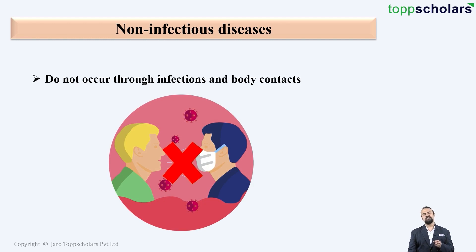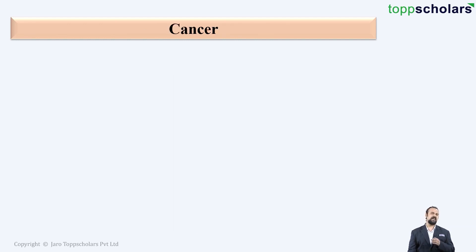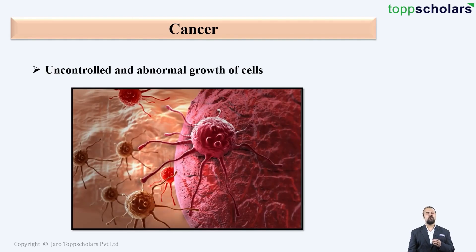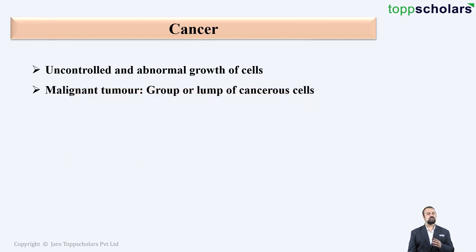The very first example is cancer. Cancer is one of the most scary and very fatal diseases. In cancer there is uncontrolled and abnormal growth of cells. This uncontrolled growth leads to the formation of a tumor. The tumor can be malignant, meaning a group or lump of cancerous cells.